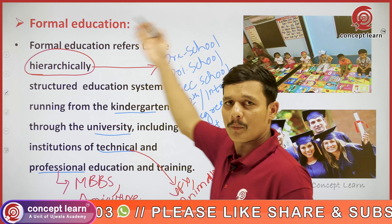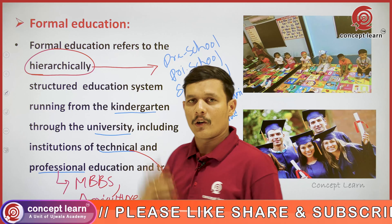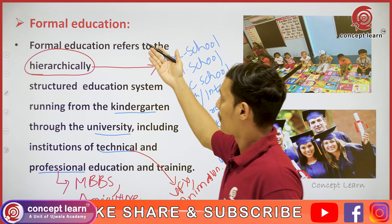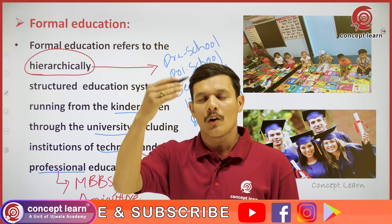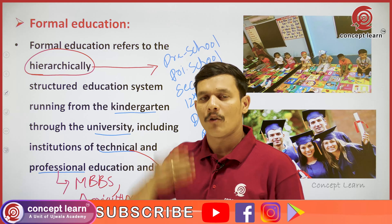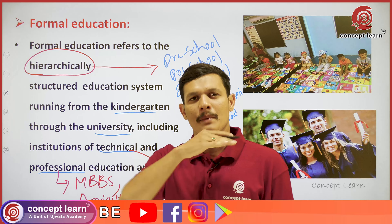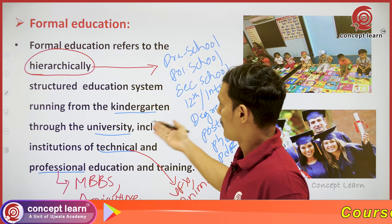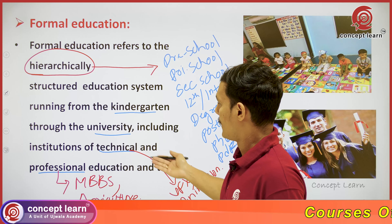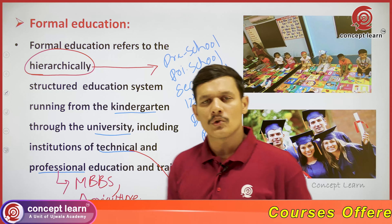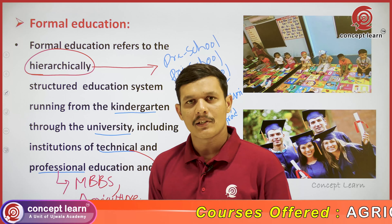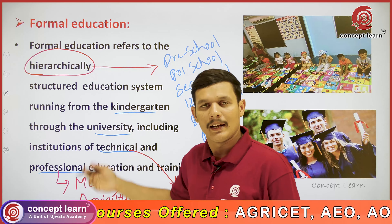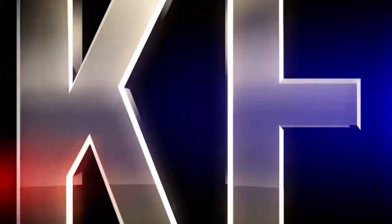Formal education follows certain rules. It follows a hierarchy — an order which ranges from the lower level of play school and extends up to the university level, and it includes both technical as well as professional courses. That is why it is called formal education.